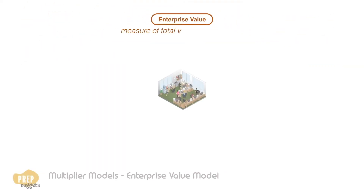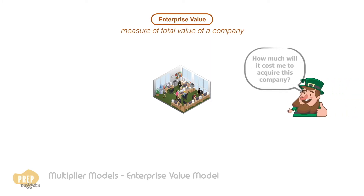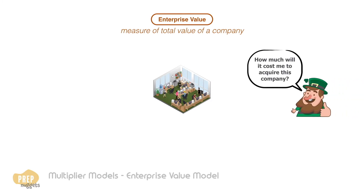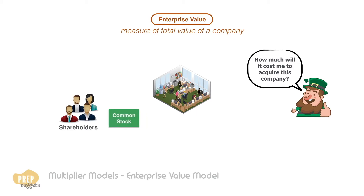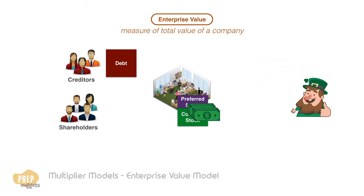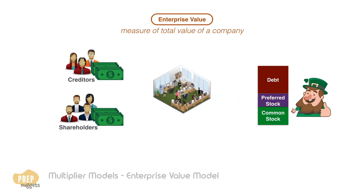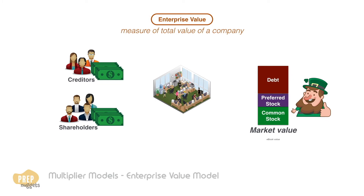Enterprise value is a measure of the total value of a company. It's often viewed as the cost to acquire the company. A company typically has shareholders who hold its common and preferred stock, and creditors who hold debt issued by the company. So if you want to acquire the company, you would need to buy over all the common and preferred shares from the shareholders and all the debt securities from the creditors. Both are bought over at their market values, not the book value.